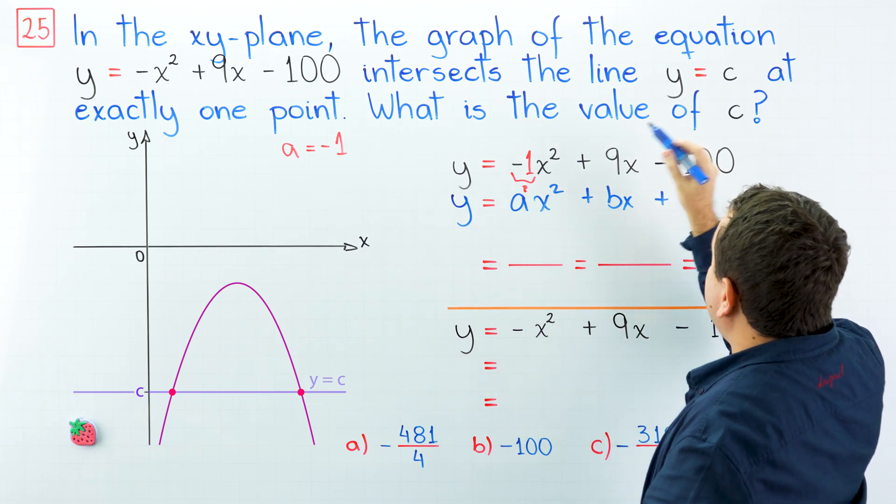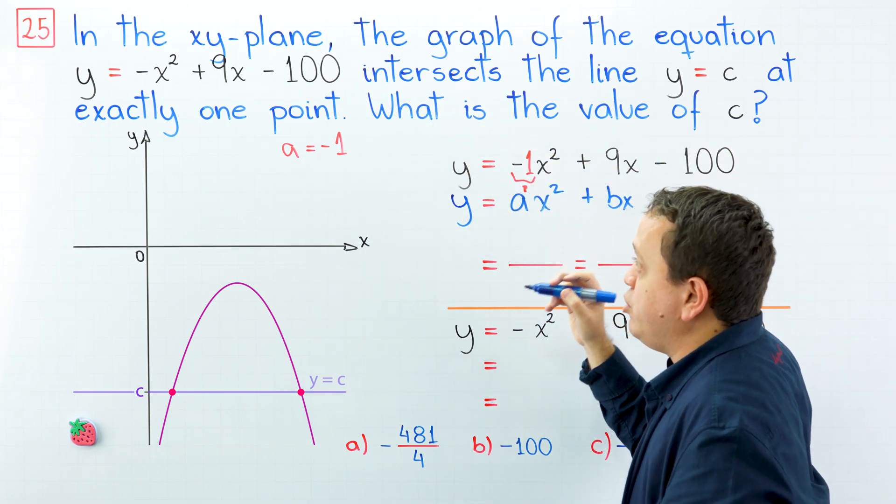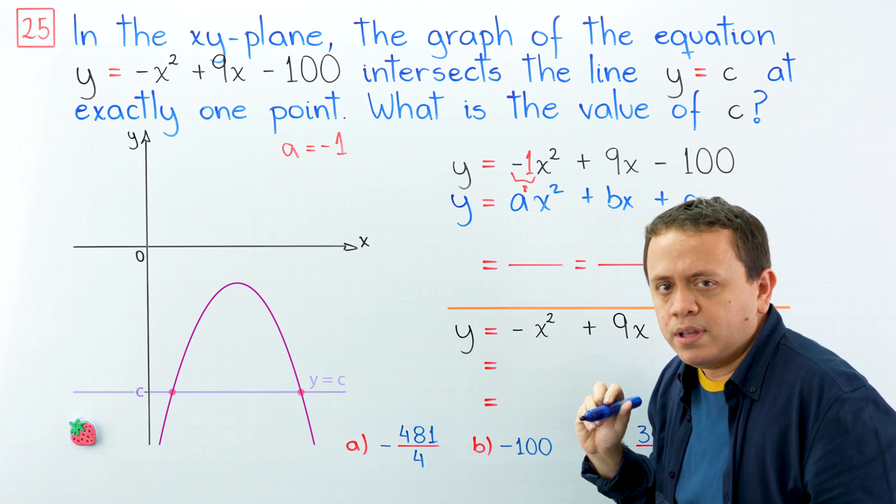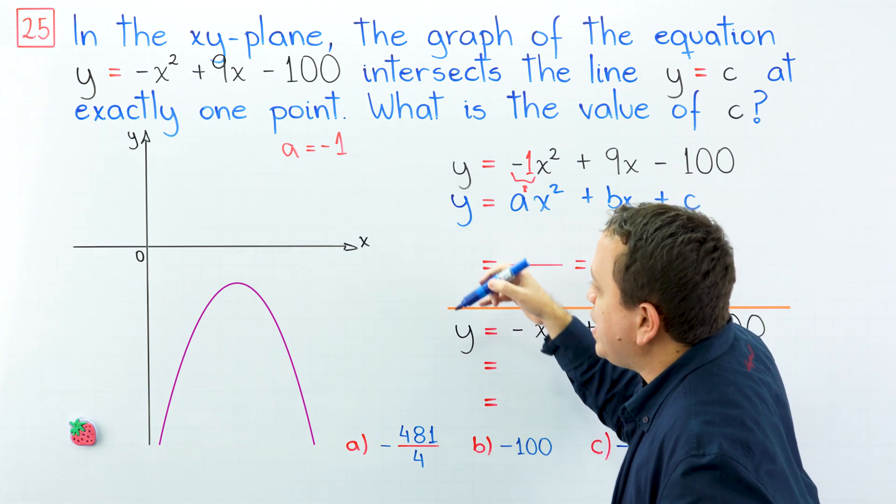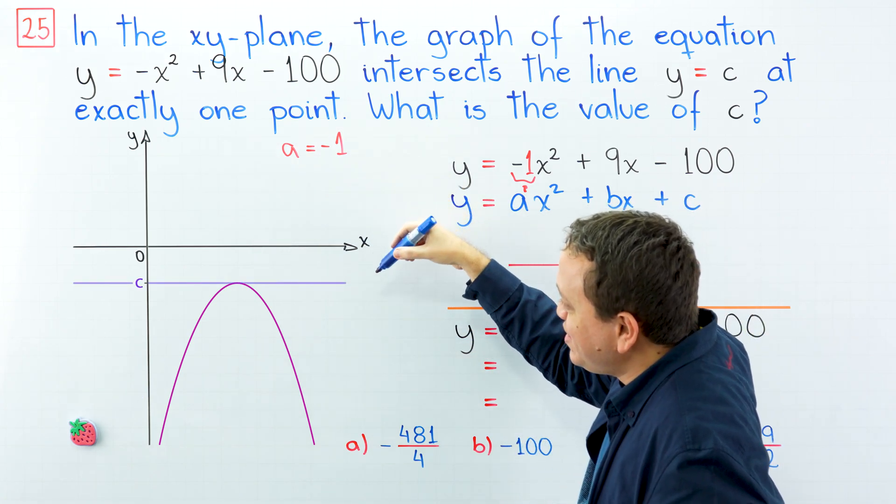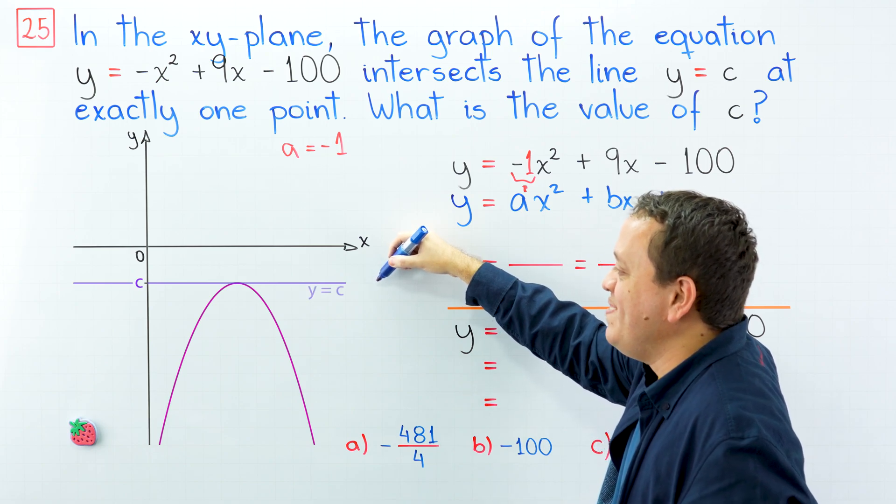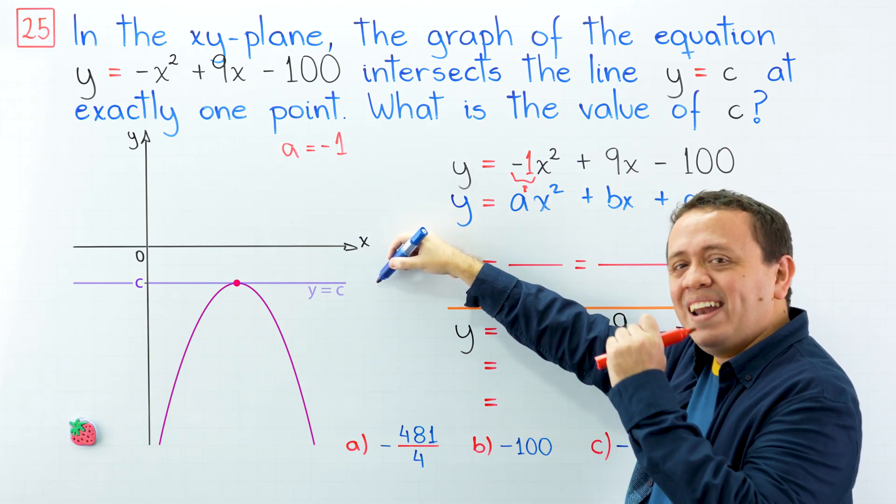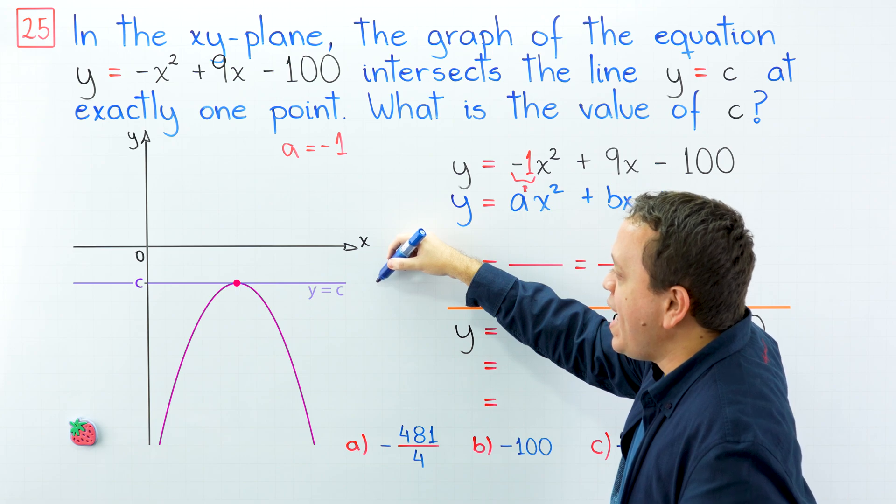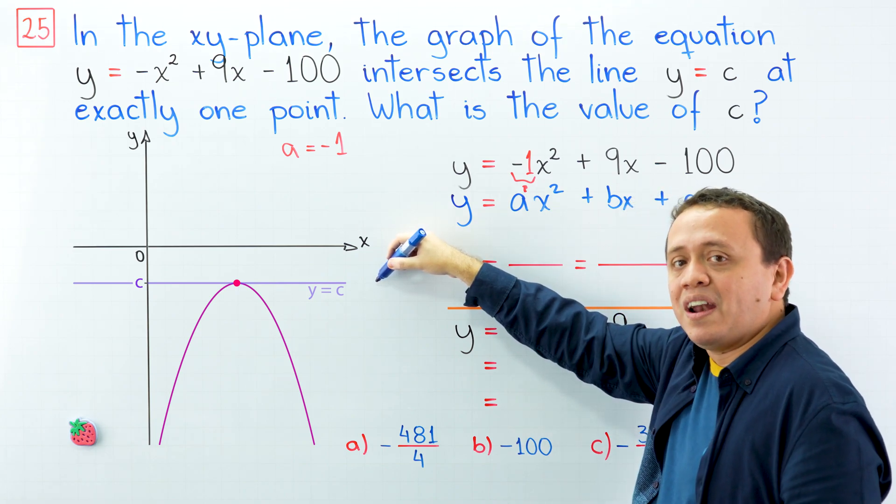However, the problem tells us that there is exactly one point, one intersection point. How is that possible? Well, if c is located here, this will be the line y = c, and there is only one intersection point between the parabola and the line. This is what we are looking for.